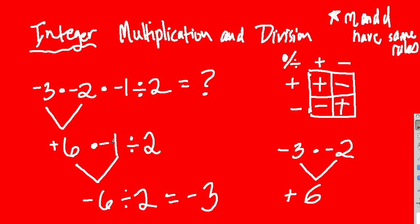Our next step was six times negative one. I pretend they're both positive and just multiply six by one to get six. Then I figure out the sign: our first number is positive, our second is negative. Looking at our chart — positive multiplied or divided by a negative is a negative, so this value is negative. Same thing for the last step: negative six divided by positive two. I just do six divided by two — that's three. And since first number is negative and second is positive, negative divided by a positive is negative, so the answer is negative three.